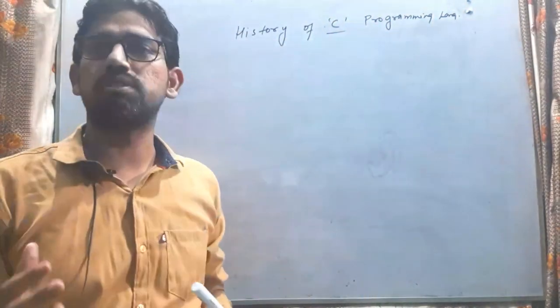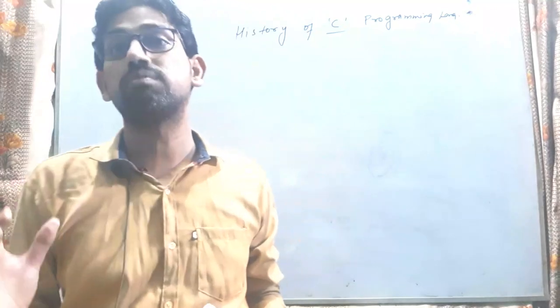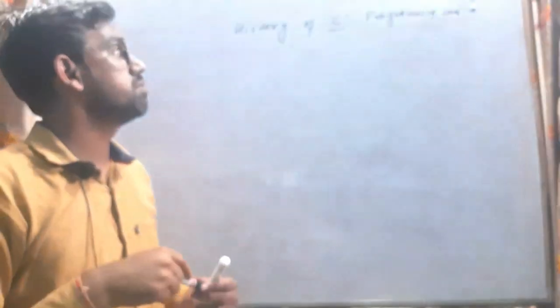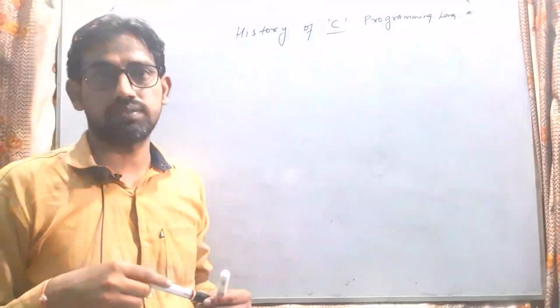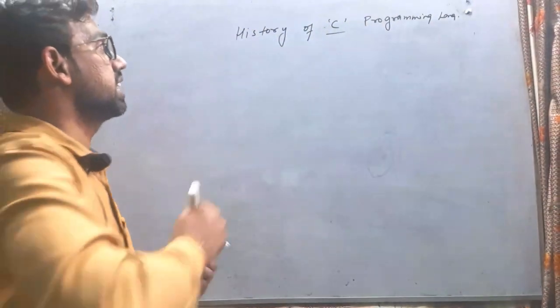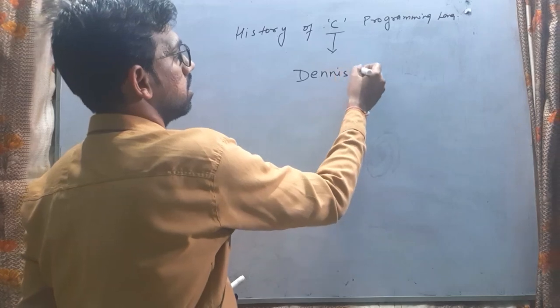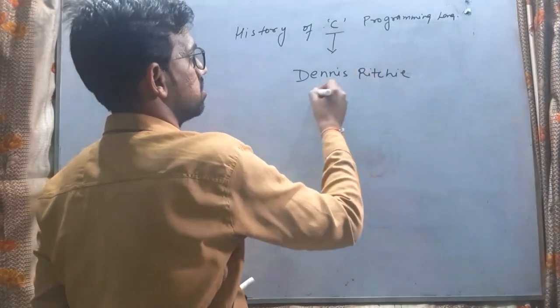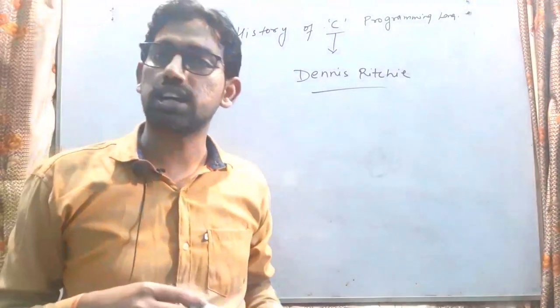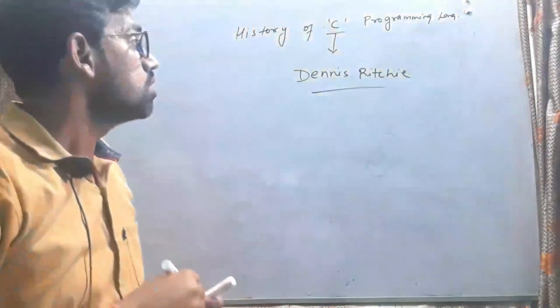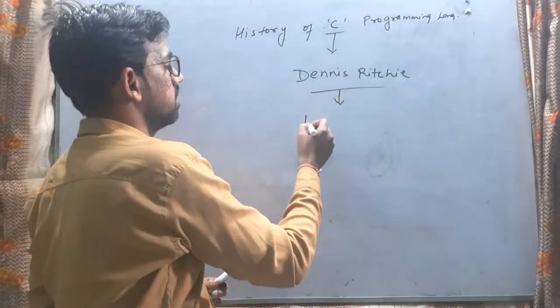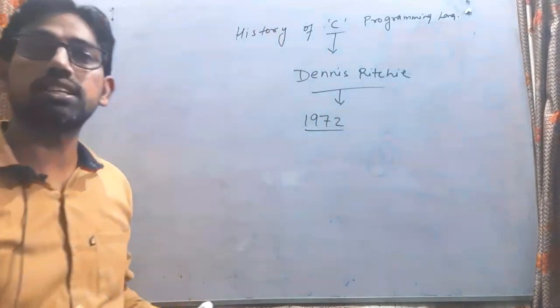मैं start करता हूँ C programming से। कोई भी programming language सीख रहे हैं तो सबसे पहले उसकी history के बारे में थोड़ी जानकारी होनी चाहिए। C के developer कौन हैं जिन्होंने C जैसी programming language को बनाया — C के developer हैं Dennis Ritchie। Dennis Ritchie को C का developer और जनमदाता कहा जाता है। उन्होंने इसे 1972 में design और develop किया — याद रखिए, 1972।